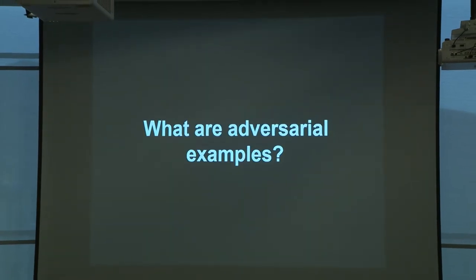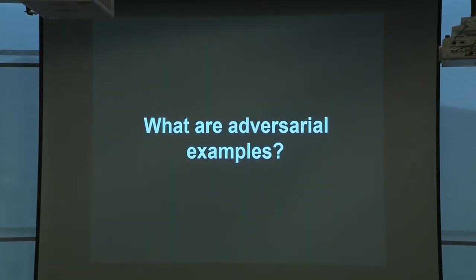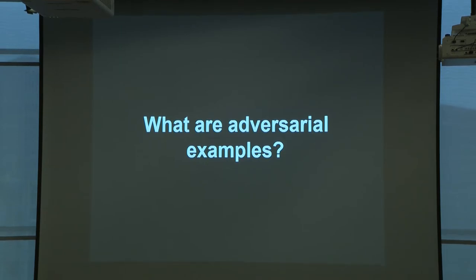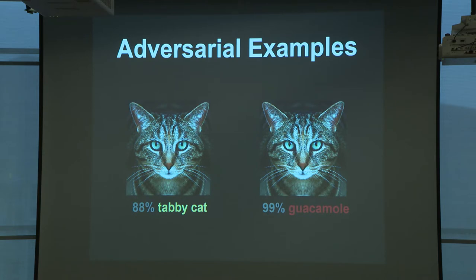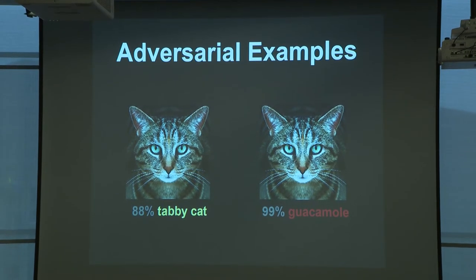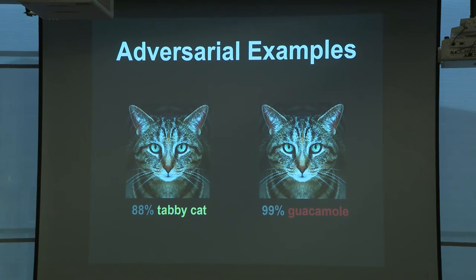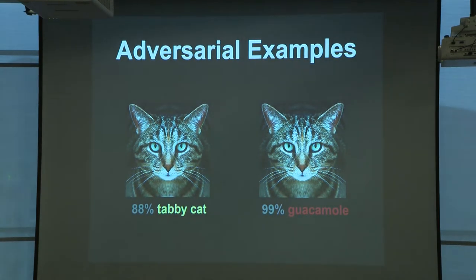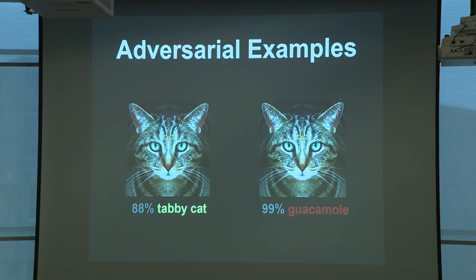I'll be speaking about adversarial examples. A brief primer for those who aren't familiar: adversarial examples are examples designed to fool machine learning classifiers. On the left here you have a tabby cat — a normal state-of-the-art image classifier would identify this with high confidence as a tabby cat. But given a certain kind of noise applied to the image, these adversarial examples with barely imperceptible noise can fool ML classifiers with high confidence, making it classified as whatever an attacker wants.